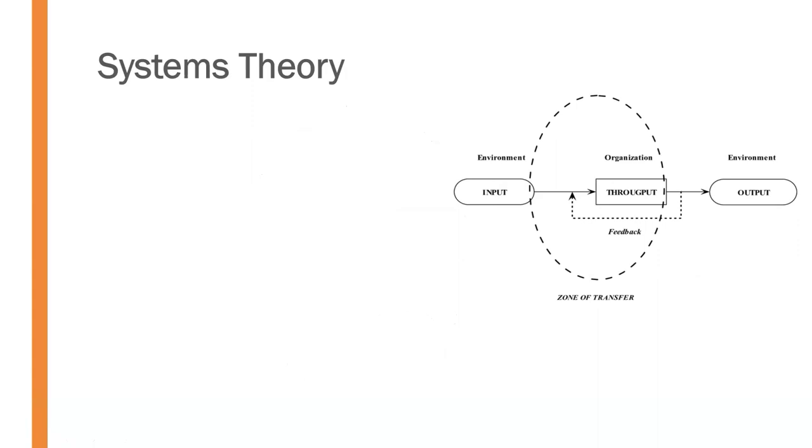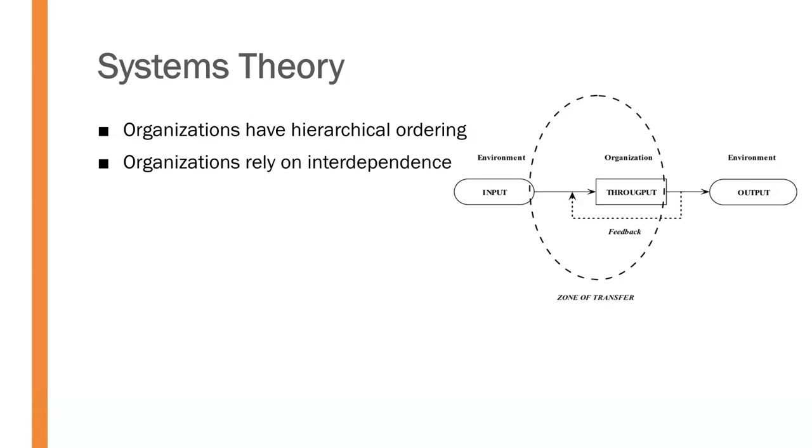Some of the fundamental principles of systems theory in organizations include that organizations have hierarchical ordering, meaning the parts of that organization are ordered in a specific way. Next, these ordered pieces rely on interdependence. This suggests that they depend on one another to fulfill their specific function so that the other pieces can do their job as well.